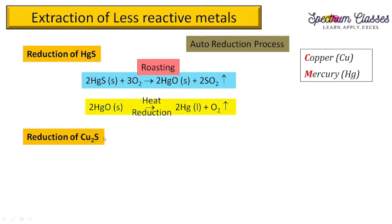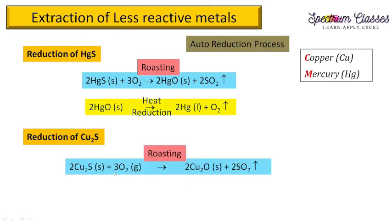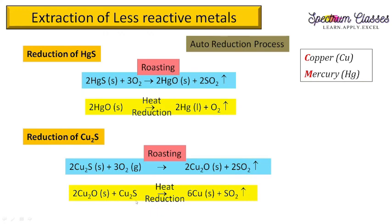Now the reduction of cuprous sulfide. We again go for roasting. The reaction is: Cu₂S (solid) + O₂ → Cu₂O + 2SO₂. This is partial oxidation. Then this Cu₂O reacts with the remaining cuprous sulfide: Cu₂O + Cu₂S → Cu (solid) + SO₂ evolved. So copper is obtained by this self-reduction reaction.